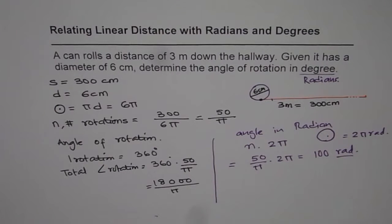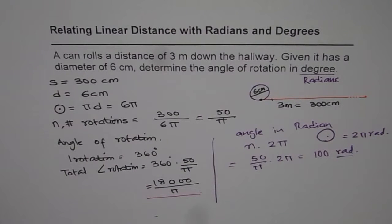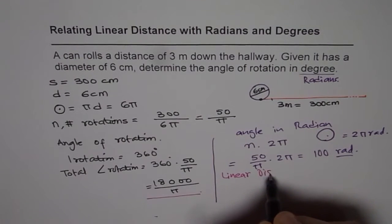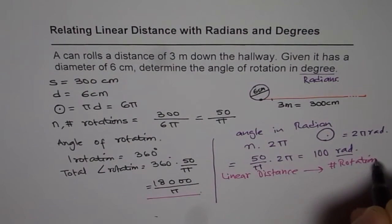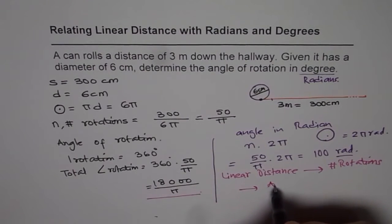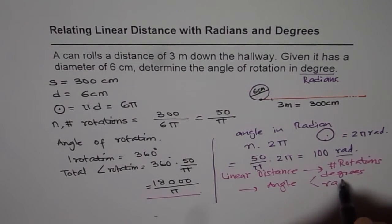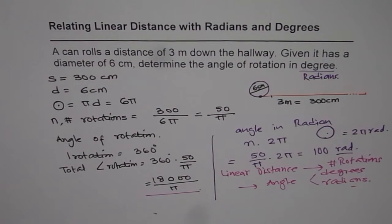However, in this question we are interested in determining the angle of rotation in degrees, so the answer is 18,000/π degrees. I hope you understand how to convert linear distance into number of rotations and then into angle, whether in degrees or radians. I'm Anil Kumar — subscribe to my videos and learn a lot. Thank you and all the best.